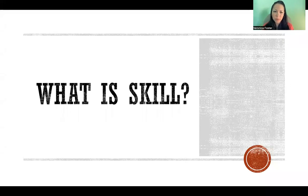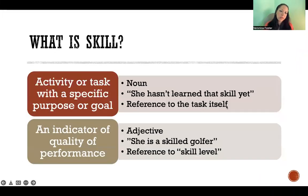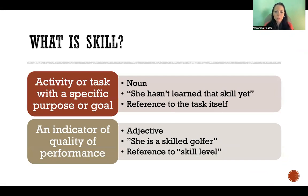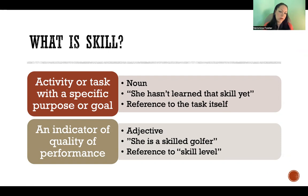In this video, I'm going to talk about what is skill, and especially motor skill. Skill in general refers to an activity or task with a specific purpose or goal. When used that way, it's a noun — we're referring to the task itself. We could say something like, 'She hasn't learned that skill yet.'